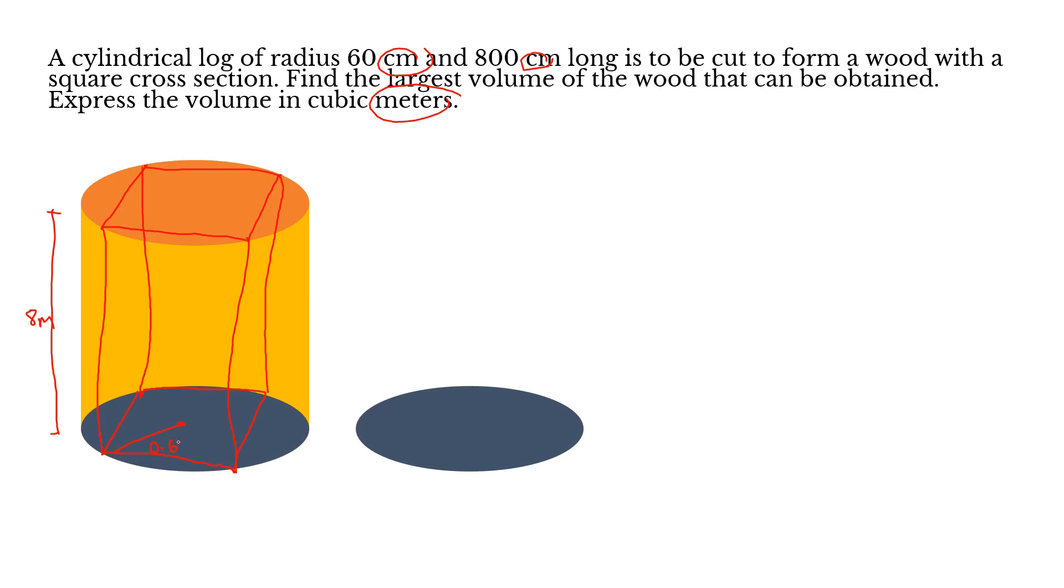To find the volume: area of the square times the height. S² × height. Assuming S is the side of the square - same dimension on all sides. S² and the height is already given as 8. The problem is, we can't solve this yet. We don't have S, we don't have the value of the side of the square. We need to figure this out.